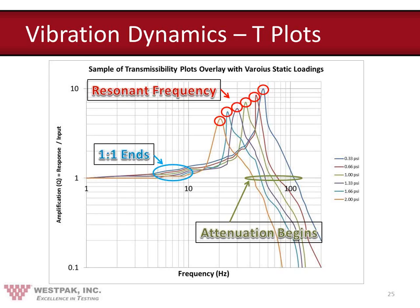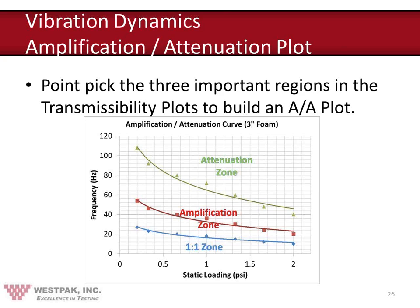To build an amplification-attenuation (AA) plot: load your cushion at a specific static loading using the test fixture, excite it with vibration, identify the three regions from the transmissibility plot, and repeat for all static loadings — typically a minimum of five. Overlaying six static loadings from 0.33 PSI to 2 PSI, you identify the resonant frequencies and attenuation zones for each. You then point-pick the three important regions for each loading and create a best-fit line — that is the AA plot. You never want to load your product into the amplification zone.